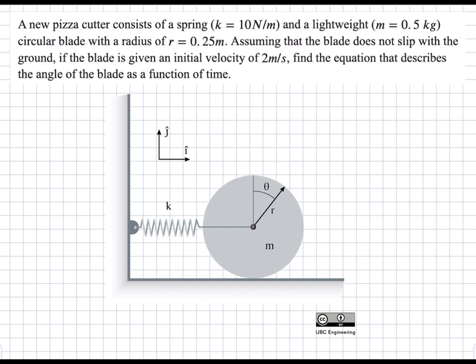In this problem we have a wheel that's rotating and it's not slipping. It's attached to a spring and we're asked to find what is the angle theta as a function of time, given an initial velocity of 2 meters per second.